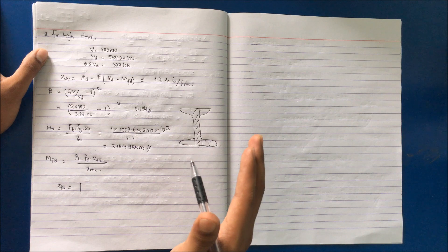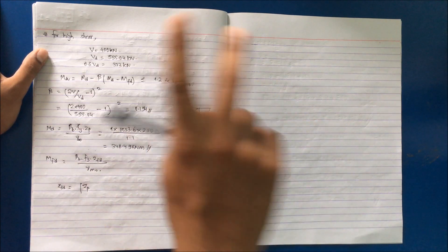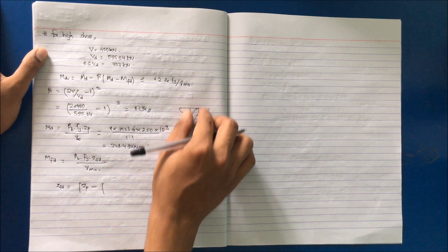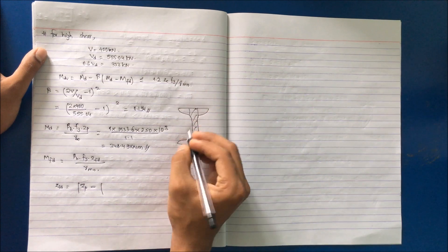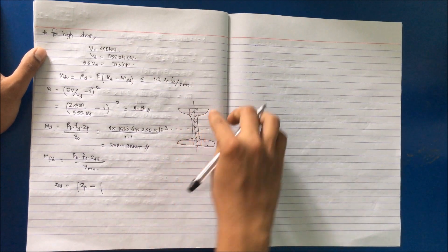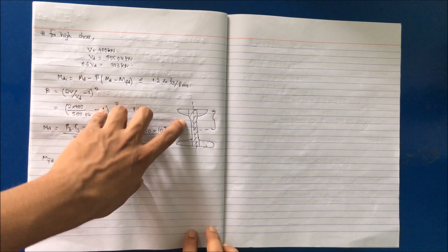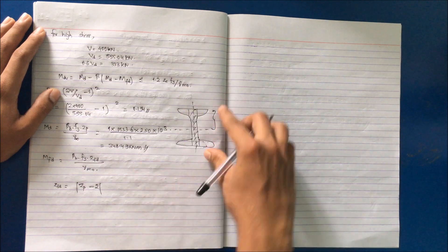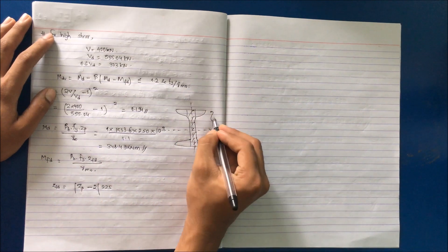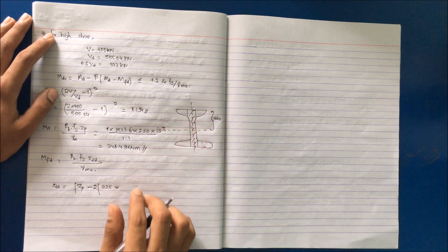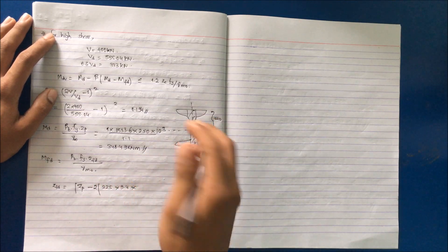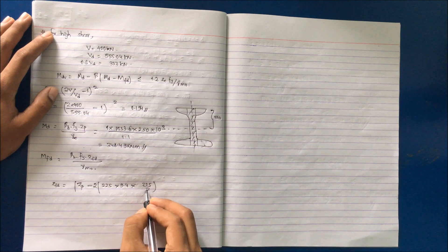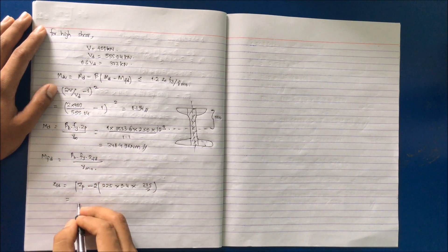Zfd is Zp of the whole section minus the shear area. The shear area is the length of the web. I will consider the section from the neutral axis, 225 mm, multiply by two to get the whole area. So 2 times 225 multiply by the thickness of the web, that is 9.4, multiply by the centroidal distance 225 by 2. Zp we know is 1533.6. Then we get the value as 1057.485 cm³.